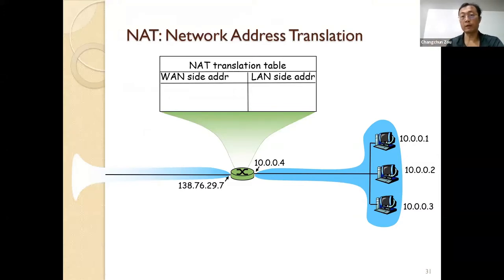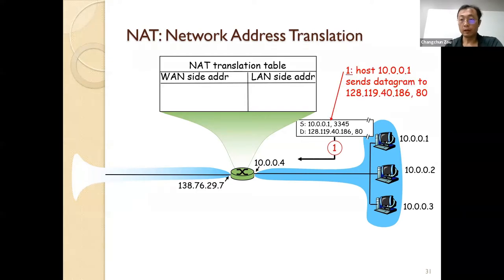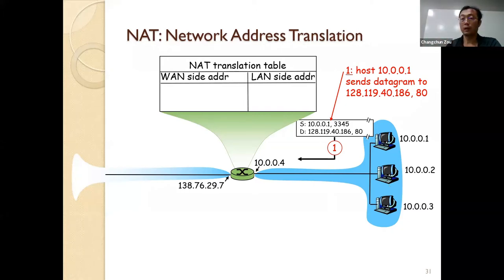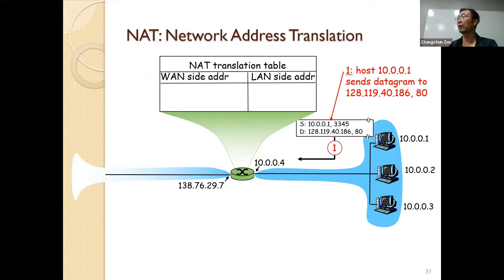This page of slides is important for you to understand how the NAT protocol works. Basically, internal computers in your home and all the computers inside the UCF network are using private IP addresses. Private IP address means this IP address will never appear in the global internet — it can only appear in the internal local area network.